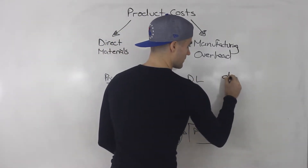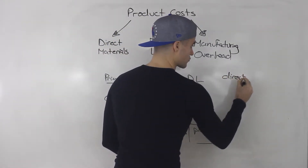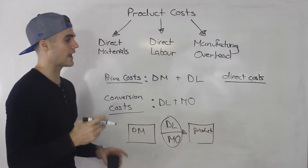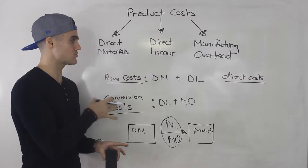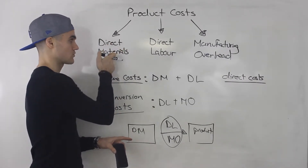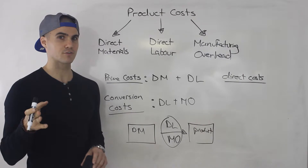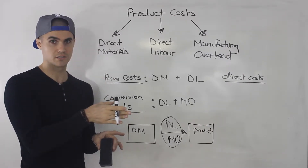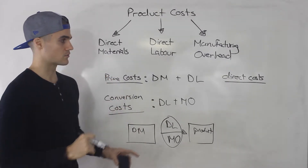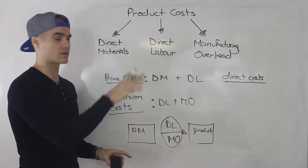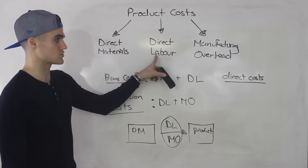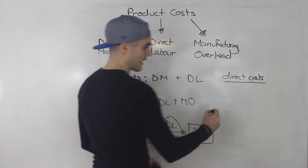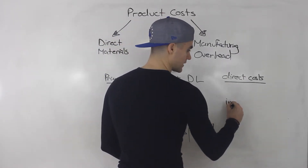Another definition you may see come up is direct costs — basically any costs that are directly traced to the product. So direct materials and direct labor. You may also see a definition like costs that are directly traced to a cost object, basically like the product. Direct materials and direct labor are direct costs for the product costs.